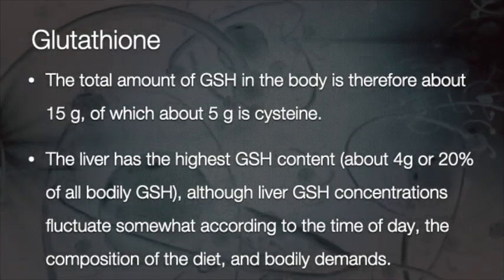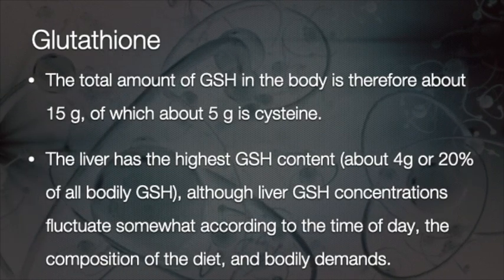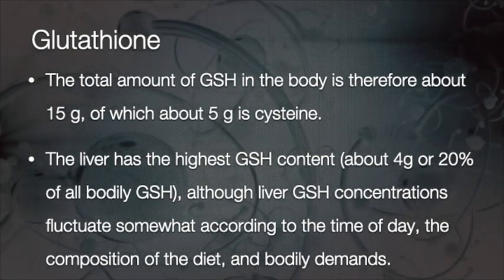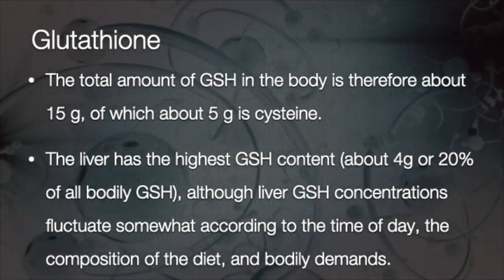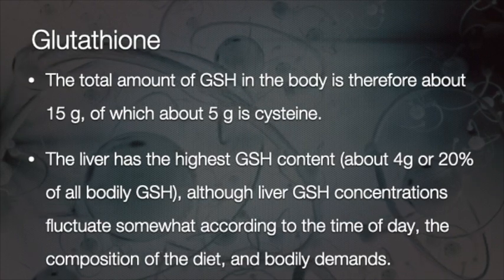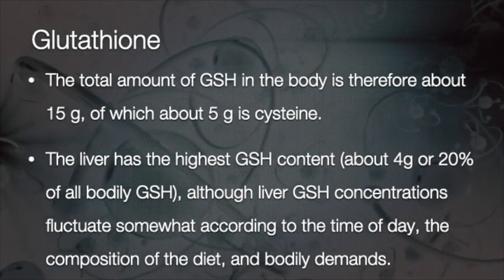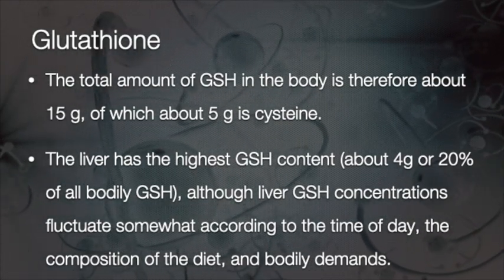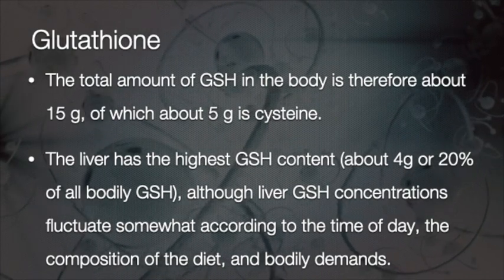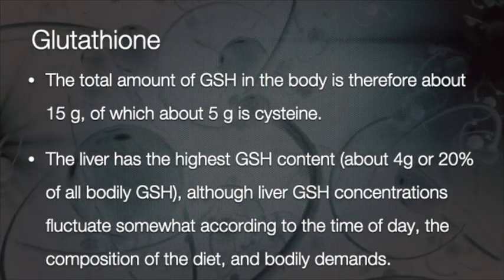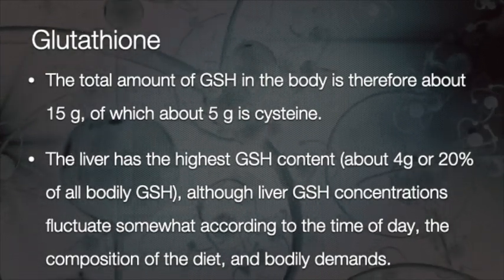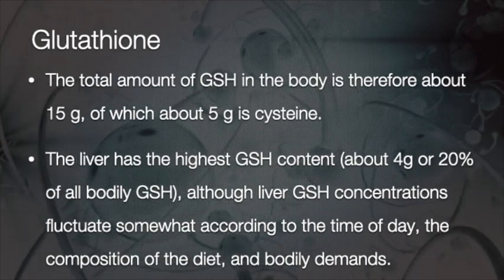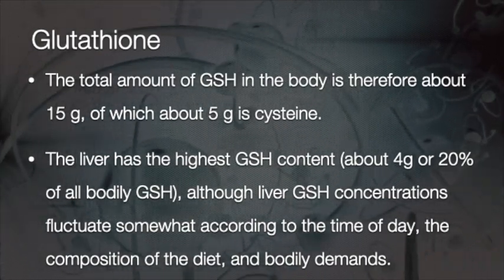This cellular glutathione concentration is similar to that of fasting glucose or potassium. The total amount of glutathione in the body is therefore about 15 grams, of which 5 grams is cysteine. The liver has the highest glutathione content, about 4 grams, although liver glutathione concentrations fluctuate somewhat according to the time of day, the composition of the diet, and bodily demands.